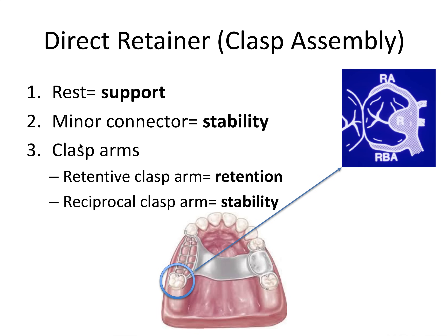And lastly, the clasp arms — which is what we'll be focusing on in this video. There are two different types. There's the retentive clasp arm, labeled RA in this image, and that provides retention. Then we have the reciprocal clasp arm, labeled RBA — which stands for reciprocal bracing arm — and this braces against the tooth surface. It doesn't necessarily lock in anywhere, but it does brace to provide stability. All four of these components make up the clasp assembly or the direct retainer.